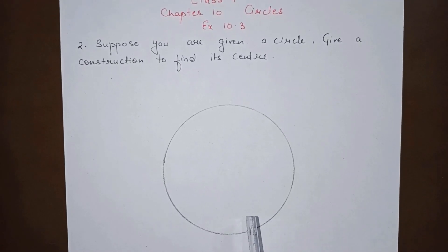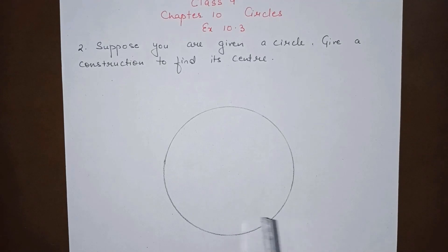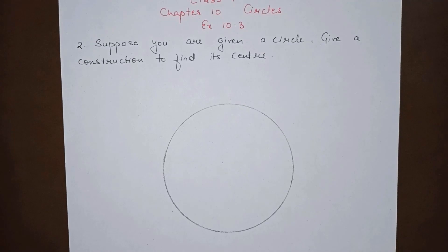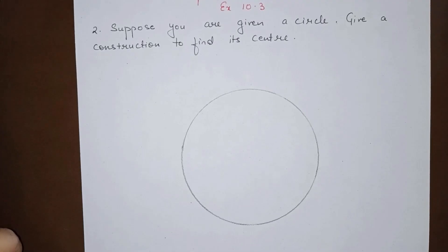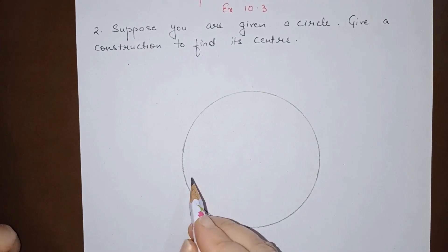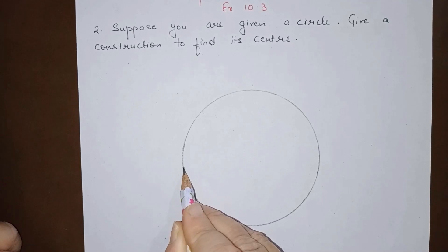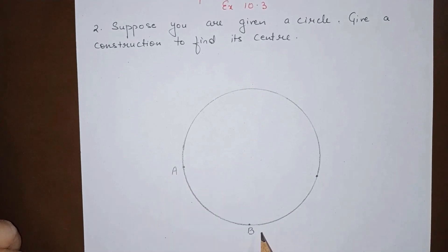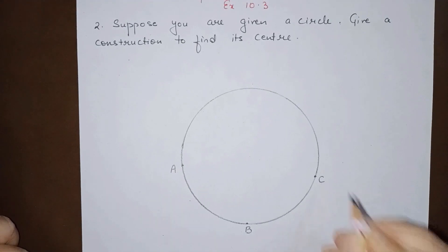Now a circle is given to us and you have to locate the center of the circle with some construction. Let us see how we can do. For this we will take 3 points on a circle, take any 3 points anywhere on the circle. Let us mark these points as A, B, C.